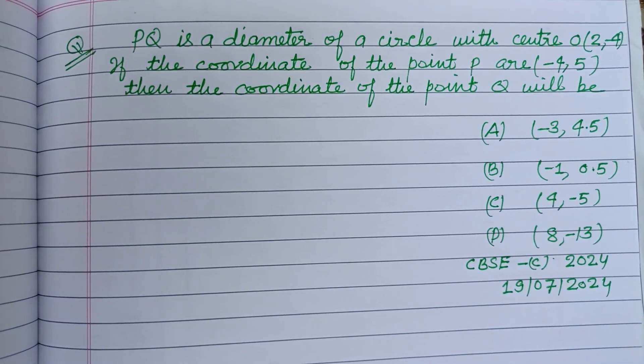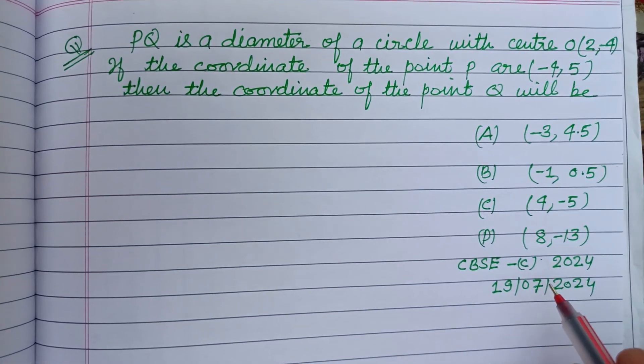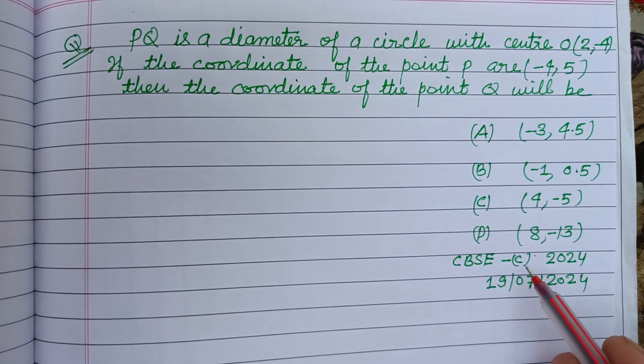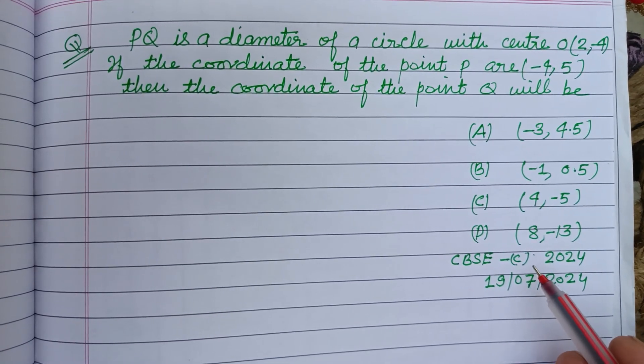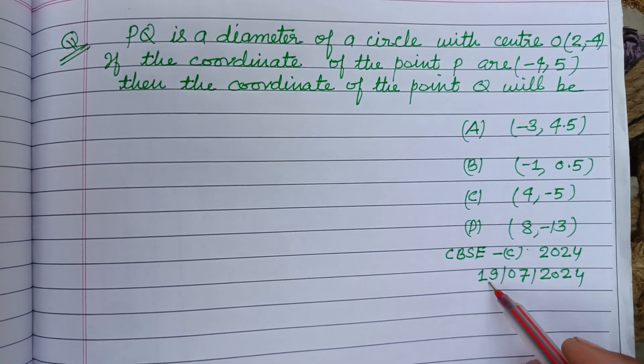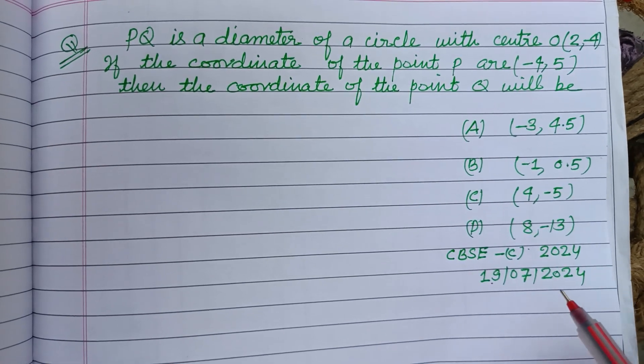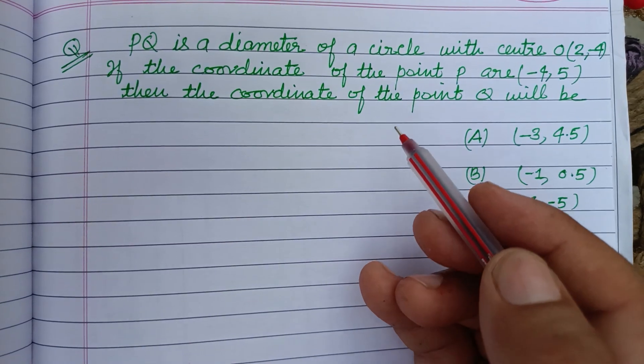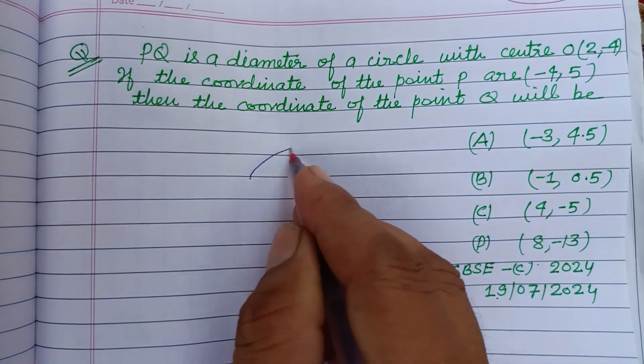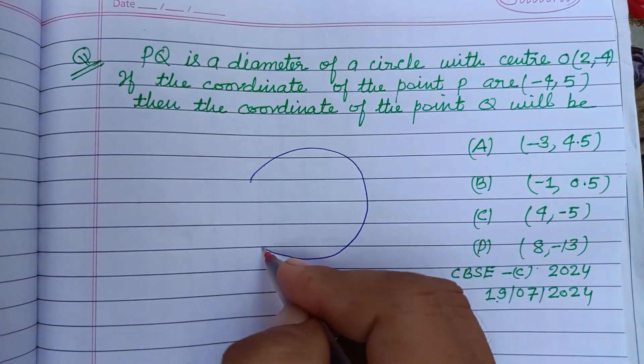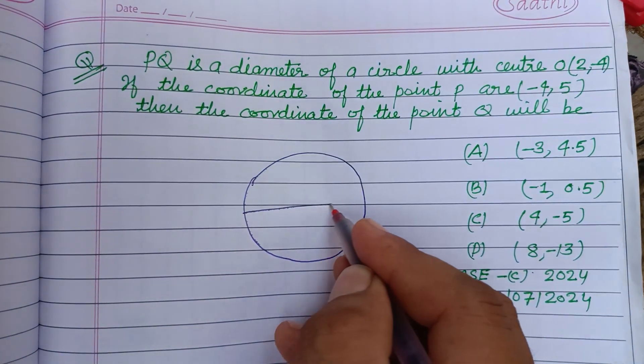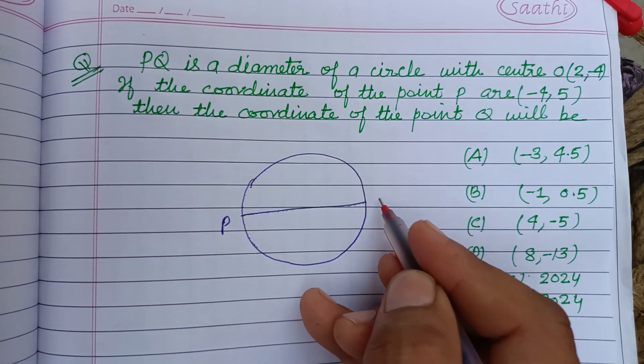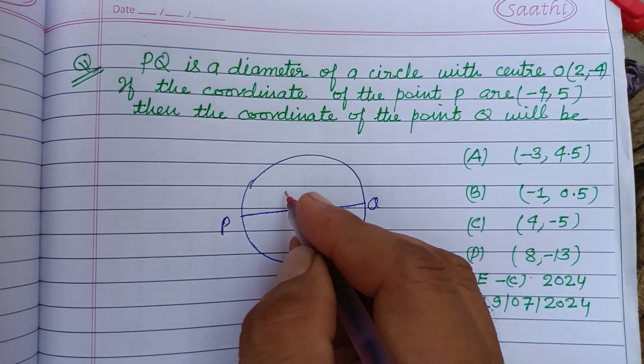Hello viewers, warm welcome to this YouTube channel. This is a question from CBSE board exam compartment 2024 held on 19 July 2024. PQ is a diameter of a circle with center O(2, -4). So this is a circle, PQ is the diameter.